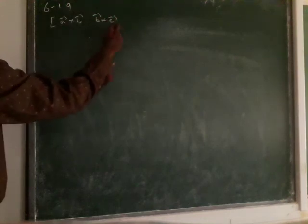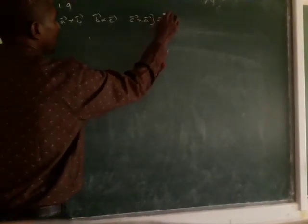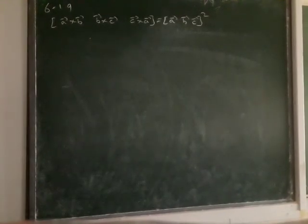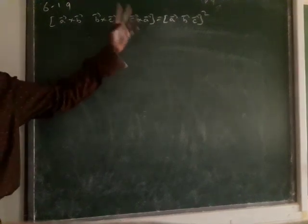Now I am going to explain the examples from 6.19. We are asked to verify the result: A cross B vector, B cross C vector, and C cross A vector equal to A vector, B vector, C vector — number 5. So we want to verify the result: A cross B, B cross C, C cross A equal to A, B in the scalar triple product.